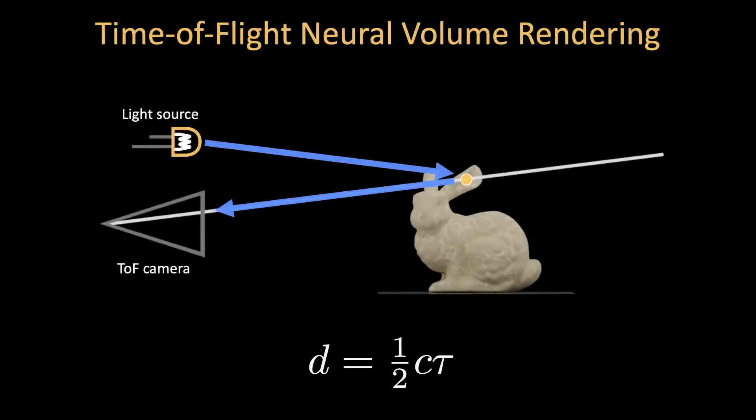Let's start with the naive time-delay model of time-of-flight imaging. A time-of-flight sensor measures the time it takes for a light signal to travel from a source, through the scene, and back to a camera. Given the speed of light, we can recover distances d.